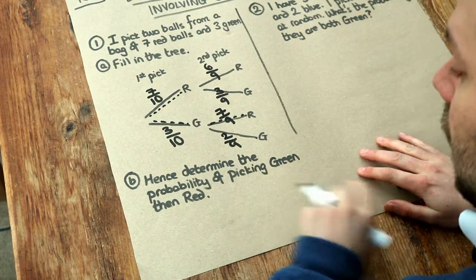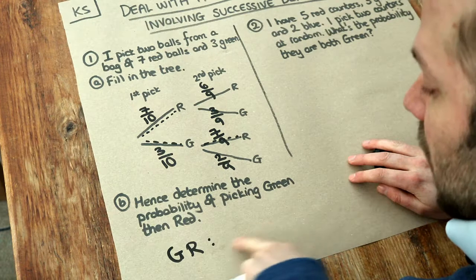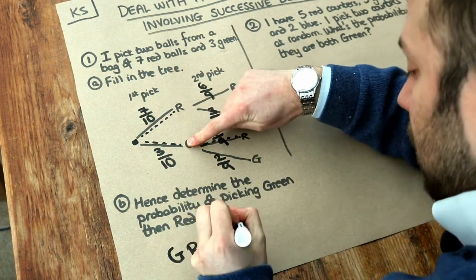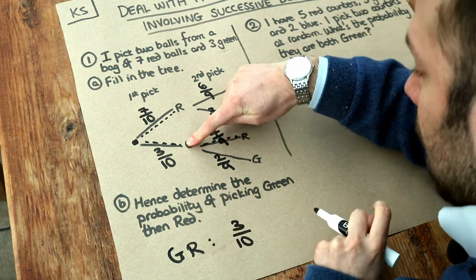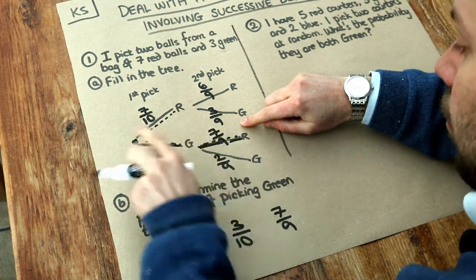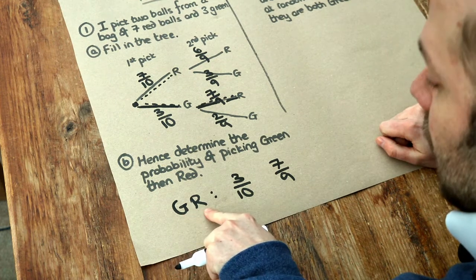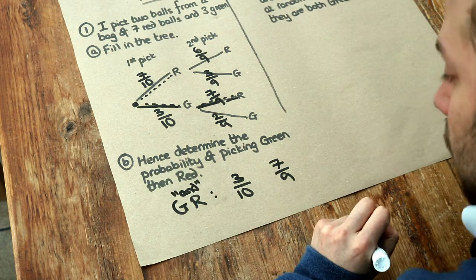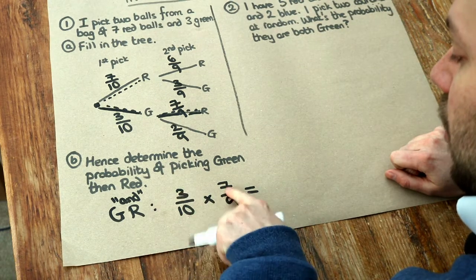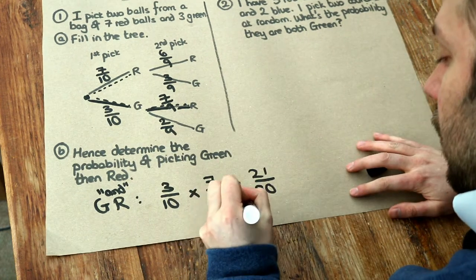Hence, determine the probability of picking green then red. We follow the probability tree from left to right. The probability of getting green is three tenths, and then given we've picked green, the probability of then picking red is seven ninths. We want the probability that the first ball is green AND the second is red — and when you use the word 'and' with probabilities you multiply. So three times seven is 21, and ten times nine is 90, giving 21/90, which simplifies to seven over 30.